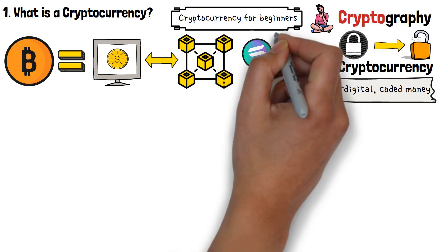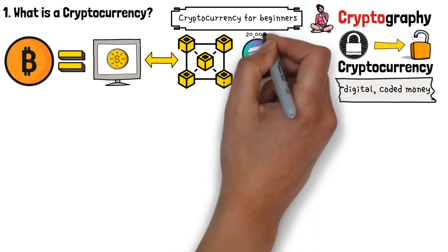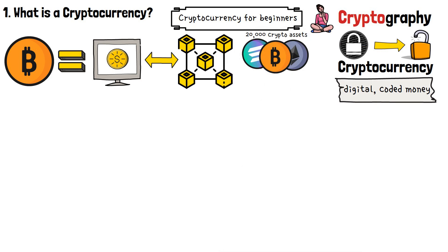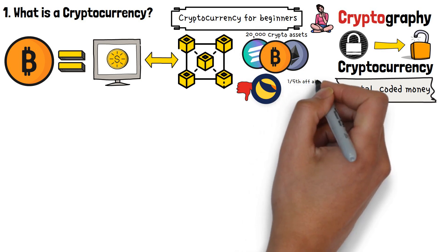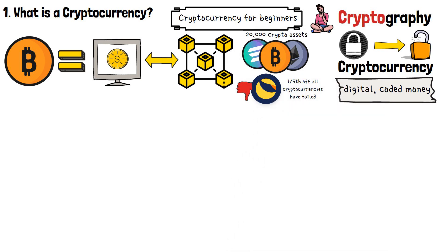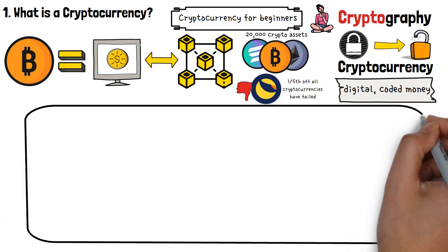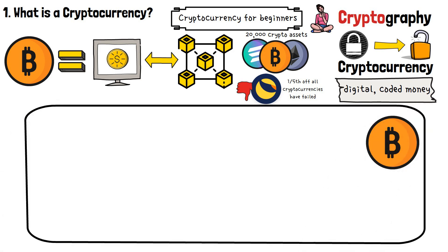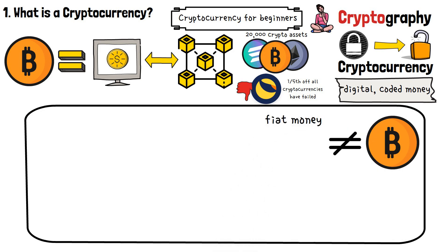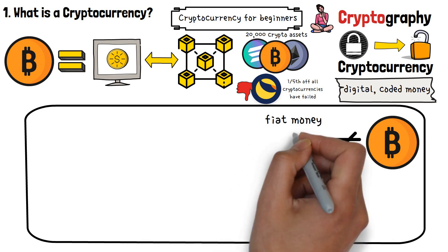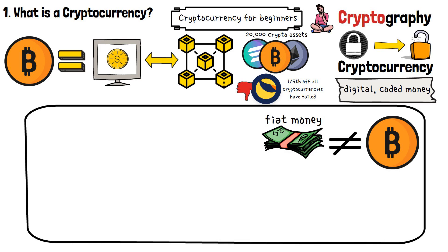At the time of making this video, there are currently around 20,000 different crypto assets out there on the market. Not all of them are successful — it is estimated that around one fifth of all cryptocurrencies have failed, which is a huge number. Allow me to give you an example to explain cryptocurrency and to illustrate how crypto money is different from fiat money, or in other words, our traditional global currencies that we use every single day — US dollars, euros, and so on.